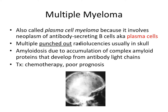Next we have multiple myeloma, also called plasma cell myeloma, because it involves a neoplasm of plasma cells — antibody-secreting B cells. I remember 'multiple' as an important word because it produces multiple punched-out radiolucencies, usually in the skull. In this x-ray you can see darker areas that look like a hole punch was used on the skull bone. It is also associated with amyloidosis due to accumulation of complex amyloid proteins that develop from antibody light chains — connected to plasma cells, which secrete antibodies.